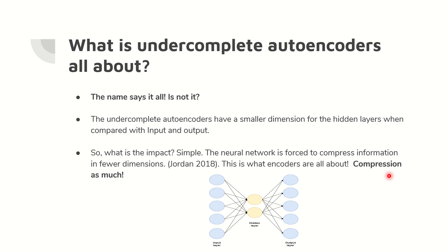Now, what is an under complete autoencoder? The name itself is very clear. Under complete autoencoders have a smaller dimension for the hidden layer compared to input and output. The vanilla autoencoder we just saw comes under this category. Whenever the hidden layer's dimension is lesser than input and output, we call it under complete. The impact is that the neural network is forced to compress the information in fewer dimensions — compression as much as possible. That is what under complete autoencoders are all about.